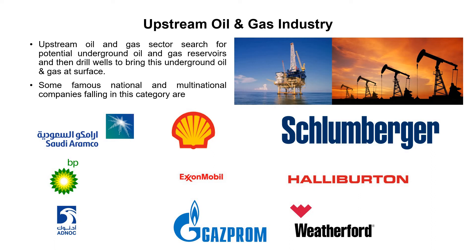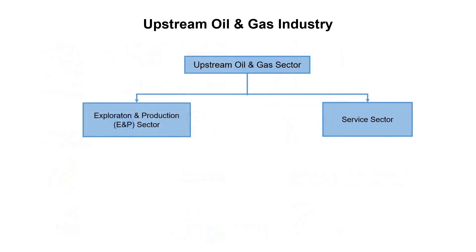Other notable upstream companies include ADNOC, ExxonMobil, Gazprom, Schlumberger, Halliburton, and Weatherford. The upstream oil and gas sector is further classified into two sectors: the exploration and production sector, also known as the E&P sector, and the service sector.